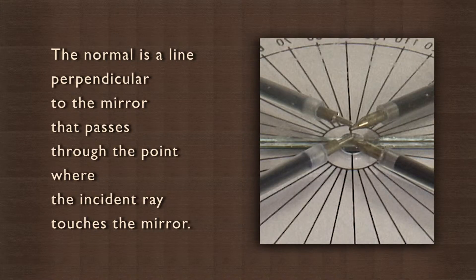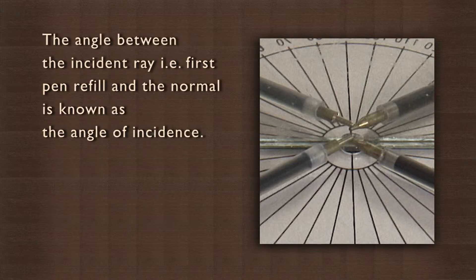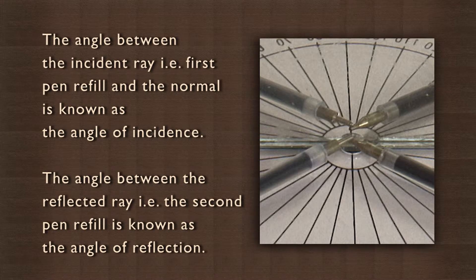The normal is aligned perpendicular to the mirror that passes through the point where the incident ray touches the mirror. The angle between the incident ray, first pen refill, and the normal is known as the angle of incidence. The angle between the reflected ray, the second pen refill, and the normal is known as the angle of reflection.